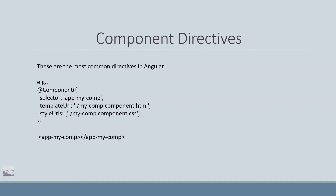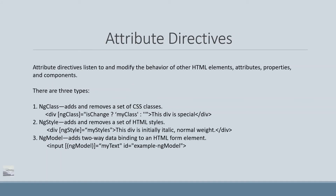The @Component decorator basically defines your component directives — what will be the selector. The selector is nothing but an HTML tag that helps you in your HTML to render it. It also defines style URLs, which is basically an array of different style sheets. We've already seen and used this to render our parent and child components.